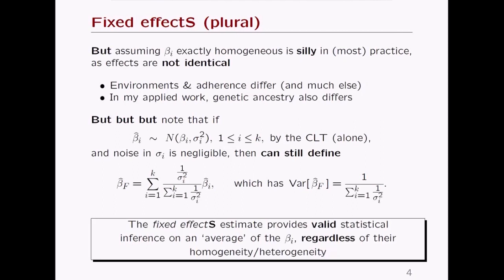Exact homogeneity might be reasonable in highly controlled lab experiments — say, the exact same strain of mice in identical conditions — but in complex diseases and human studies, it is not a realistic assumption. So that assumption is a problem in most practical settings.